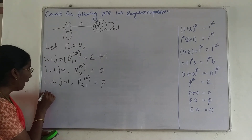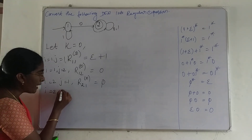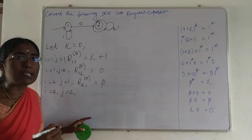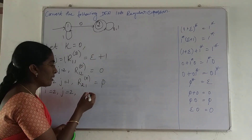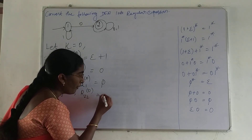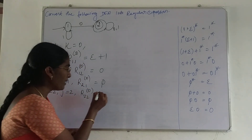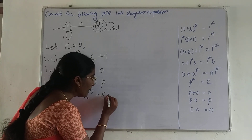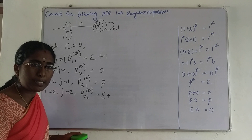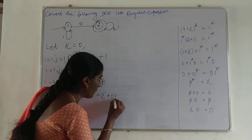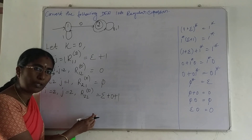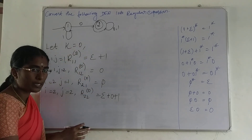The last one is I=2, J=2 — the self-transition for state 2. R22 power 0: for self-transitions we include epsilon plus the self-transition value, which here is 0 and 1, written as 0+1 in regular expression form. So R22⁰ = epsilon + 0 + 1. These are the regular expressions for the four transitions with K=0.